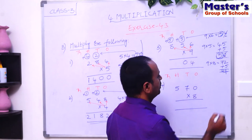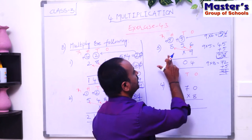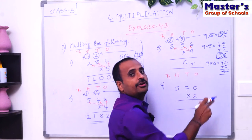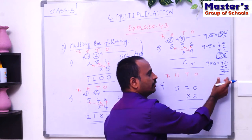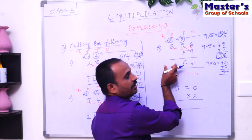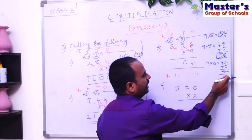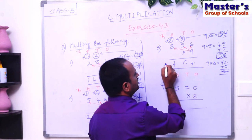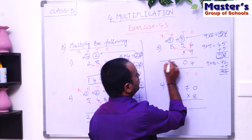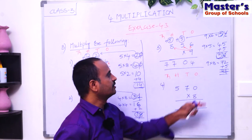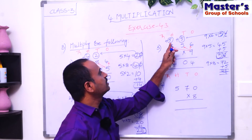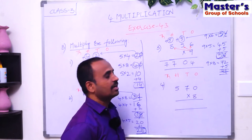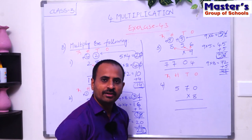There is no thousands place, so there is no need to carry. Write 7 under hundreds place and 7 under thousands place. The answer is 7704.